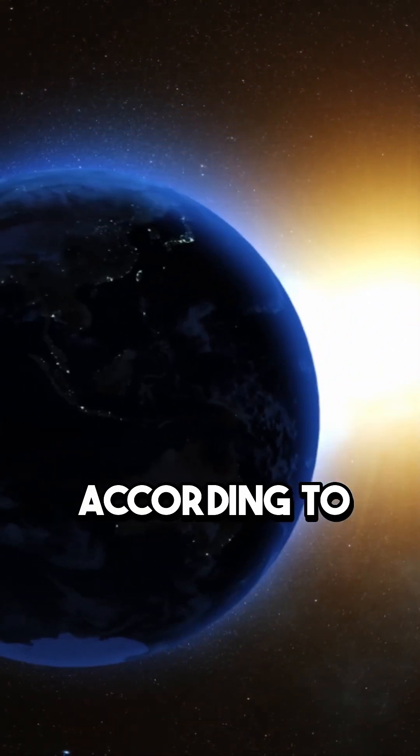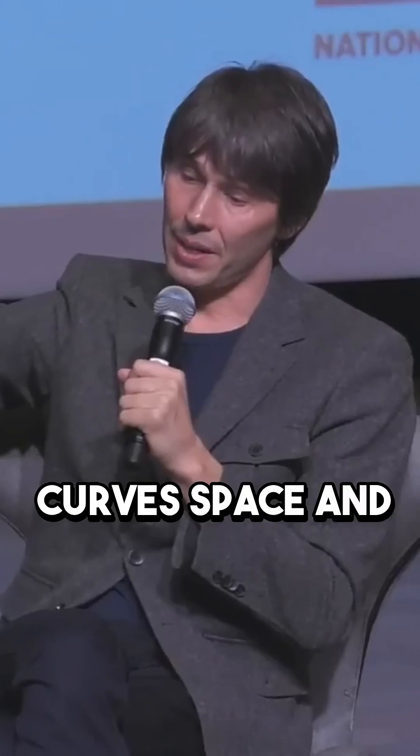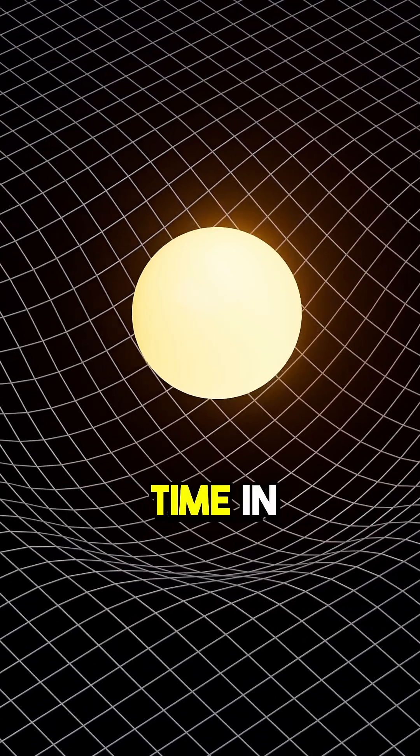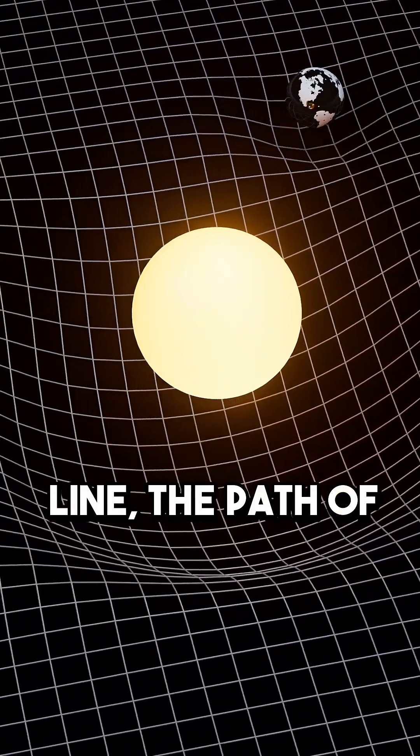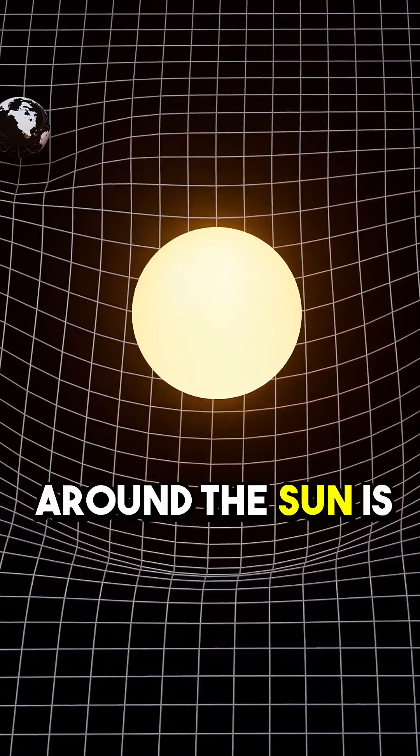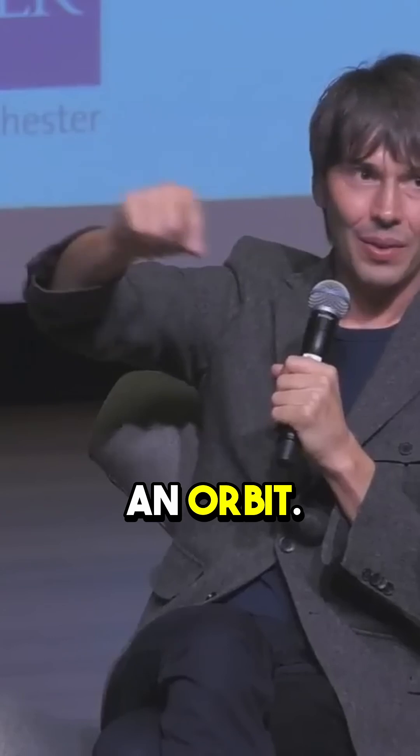Why does the Earth orbit the sun, according to Einstein? Because the sun curves space and time in such a way that the straight line, the path of falling essentially around the sun, is actually an orbit.